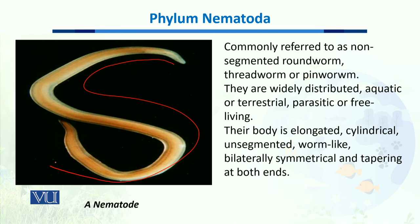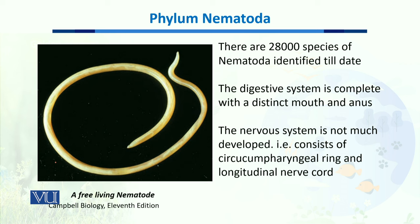The body is bilaterally symmetrical and tapering at both ends, meaning the mouth and anus at either end are smaller compared to the middle body. When we talk about species identified so far, there are 28,000 species of nematodes explored. Their digestive system is complete with a distinct mouth and anal part. Their nervous system is not very developed — it only consists of a circumpharyngeal ring and longitudinal nerve cord, so it is at a very primitive state.